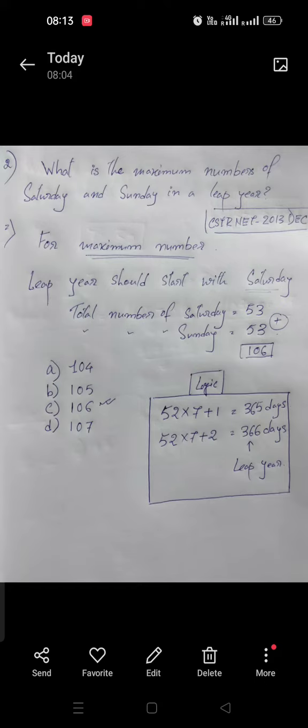For the maximum number, a year must be started with that particular day. In a normal year there are 365 days, so the calculation is like that: 52 times 7 plus 1. Within the seven days in a week, any one day will be 53 times in a regular year.